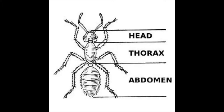All insects have a head, a thorax, and an abdomen. The head is the center of an insect's senses, but different kinds of insects can have very different looking heads. The thorax is the middle part of the insect's body. The abdomen is at the end of the insect's body, farthest away from the head.